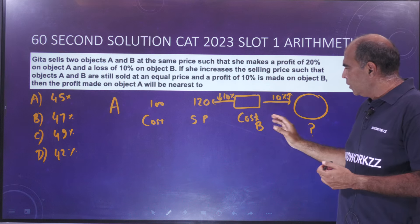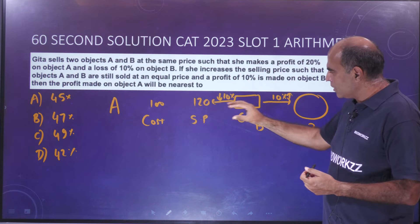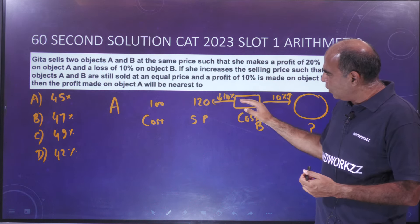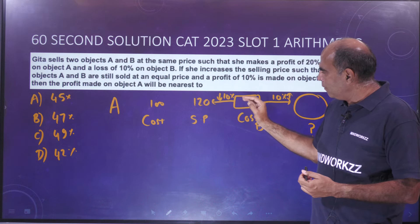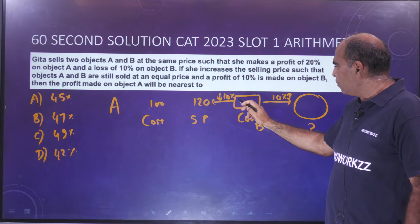So this is the key first trigger. There must be a cost of object B which is above 120 so that you get a loss of 10% when you go from this value to 120. So you should be able to see 133.33 if you have practiced these numbers.